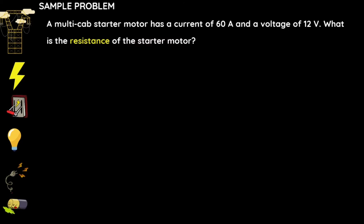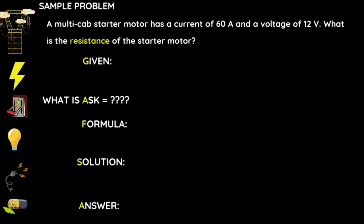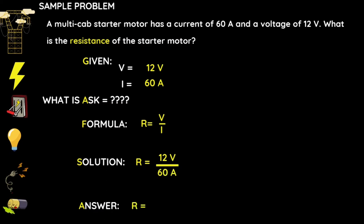Let us compute a sample problem about resistance. A multi-cab starter motor has a current of 60 amperes and a voltage of 12 volts. What is the resistance of the starter motor? Given: voltage = 12 volts, current = 60 amperes. Formula: resistance equals voltage divided by current. Solution: 12 volts ÷ 60 amperes = 0.2 ohms.